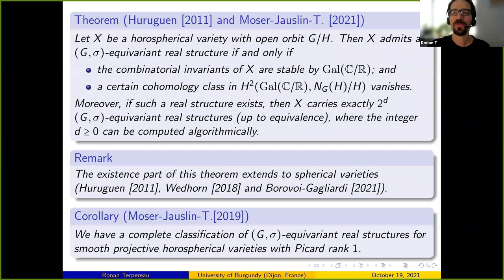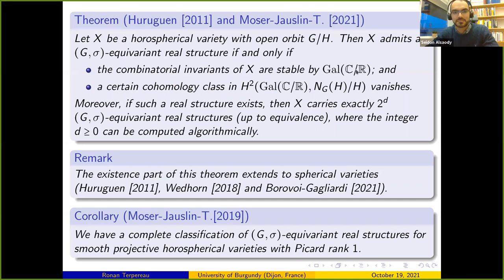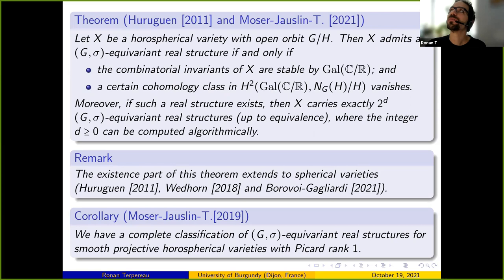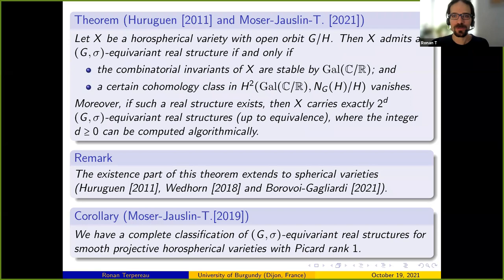The finite subgroups of SL2 are well known since Klein's classification: they are of ADE type. Type A corresponds to cyclic groups, type D to binary dihedral groups, and types E6, E7, E8 to the three binary polyhedral groups. I fix a real group structure on SL2 — there are exactly two up to equivalence: SL2(R) and SU(2).